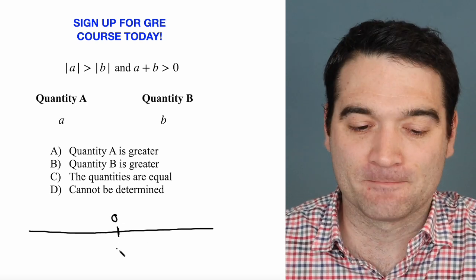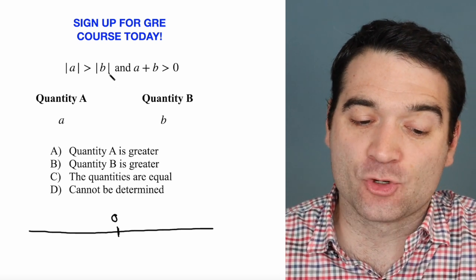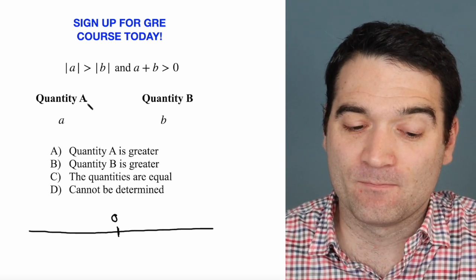So let's do that. I'm going to put zero right there. Now, what do we know here? We know that the absolute value of A is greater than the absolute value of B. Well, what does that mean?